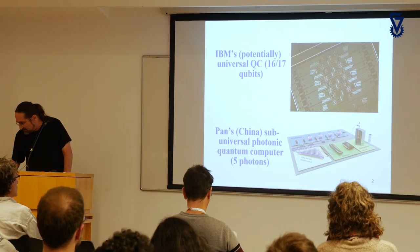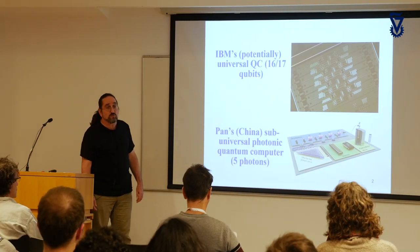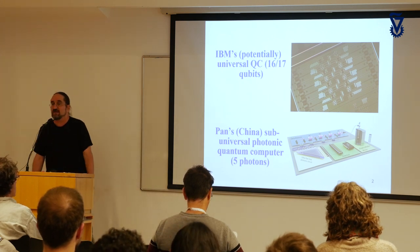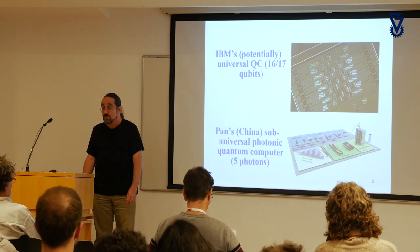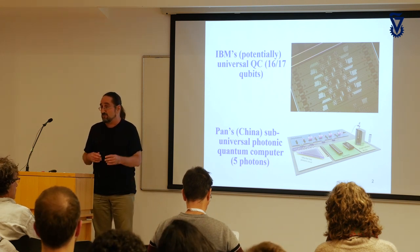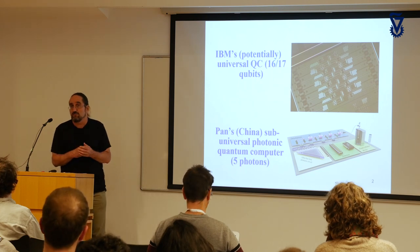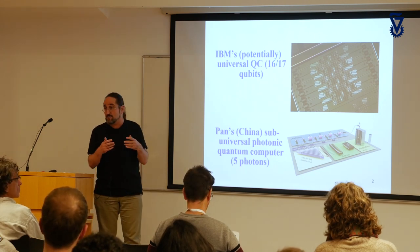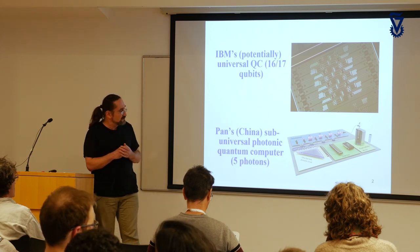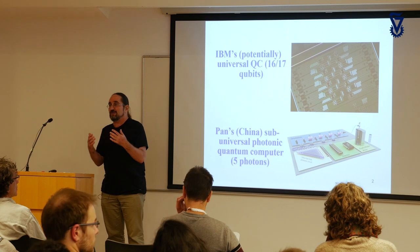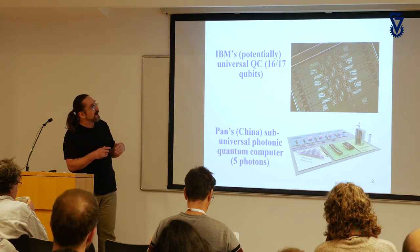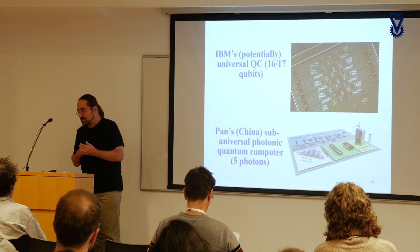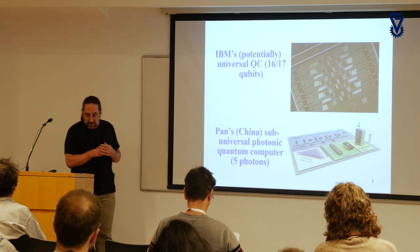Quantum computers are still in a stage equivalent to standard computers about 40, 50, or 70 years ago, when people didn't know yet whether transistors or radio tubes or various other things would be the dominant technology. It was not clear yet what the computer would look like in 10 years, and we are exactly in this situation. While IBM, Google, and Intel are working in one direction, there is another company called Rigetti, also allowing the public to use their computers, similar to IBM.